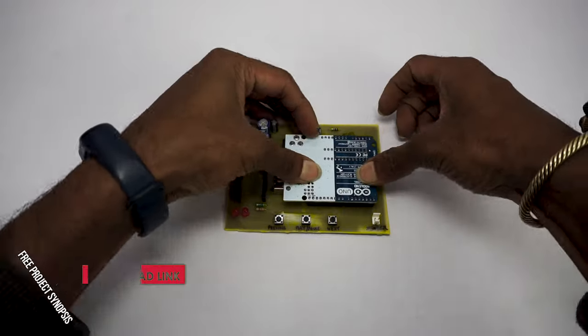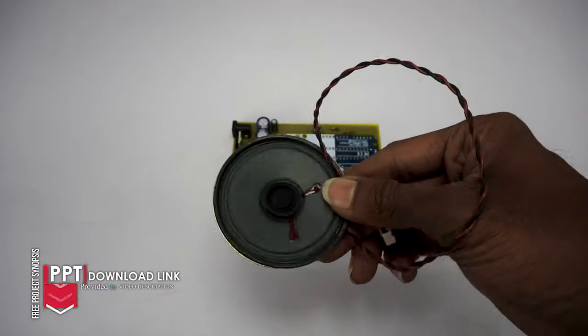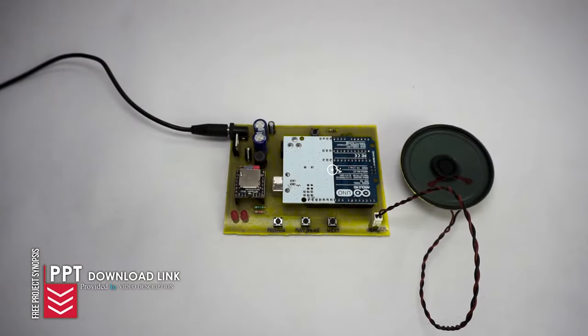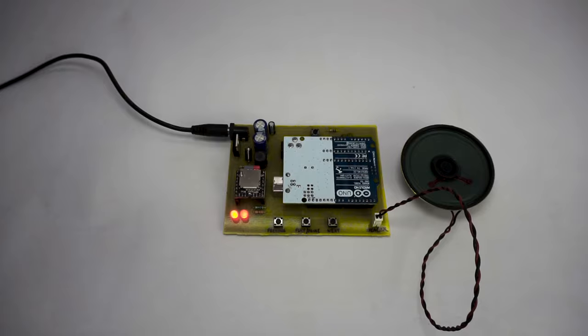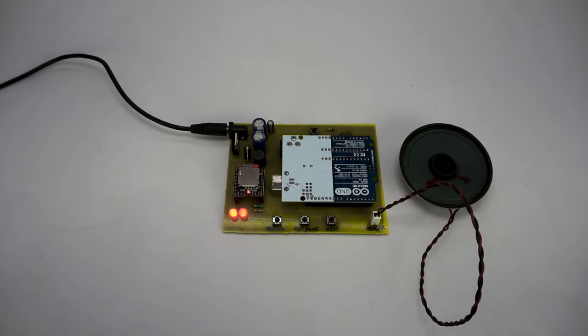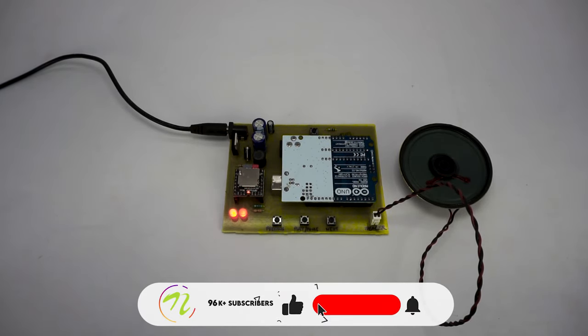This is a mini MP3 player which can play songs from a memory card. Here we use an Arduino Uno, a speaker, and a memory card reader. This has three options: three push buttons for next song, previous song, and play or pause option.